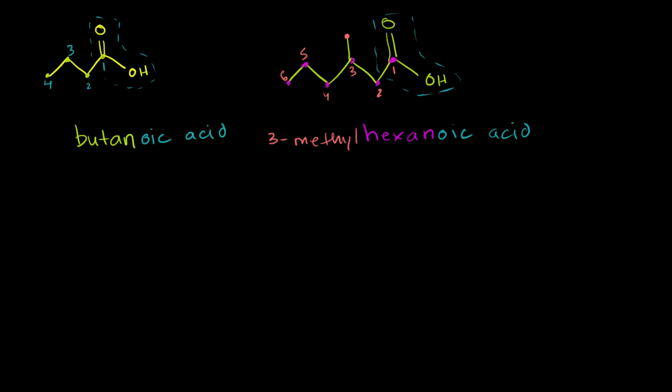Let's do one more. Let's say we had a molecule that looked like this. Let's see, that's one, two, three, four, five, six, seven carbons. And then we have our carboxyl group, just like that. And let's say that we had a double bond right over there. What would we call this?